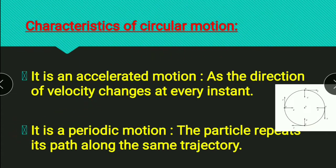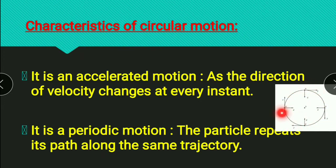The second characteristic is that it is a periodic motion. The particle repeats its path along the same trajectory — it repeats the same set of motion again and again. So these are the two characteristics of circular motion which are always true: it is an accelerated motion and it is a periodic motion.